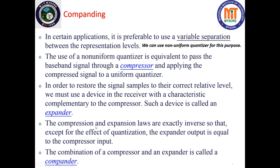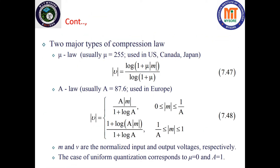The combination of a compressor and an expander is called a compander. The compression and expansion laws are exactly inverse, so that except for the effect of quantization, the expander output is equal to the compressor input — we get back the signal in its original state after companding. There are two major types of compression laws: mu-law compression and A-law compression. Mu-law has a maximum value of mu equal to 255, used in the US, Canada, and Japan, whereas A-law has a typical value of 87.6, used in Europe.